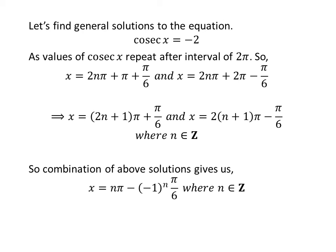Also, minus 1 raised to the power of n is minus 1 if n is odd, and plus 1 if n is even. So the general solution to the equation is n times pi plus minus 1 raised to the power of n times pi upon 6, where n is an integer.